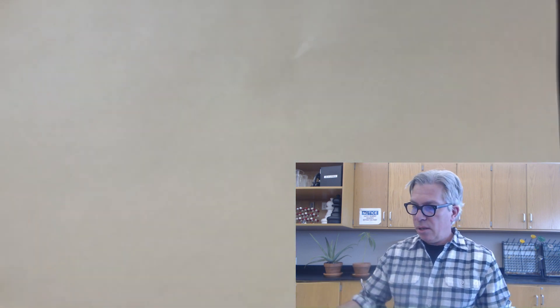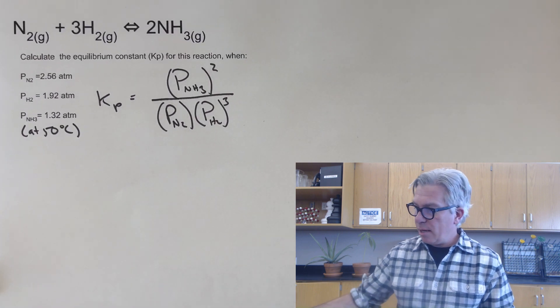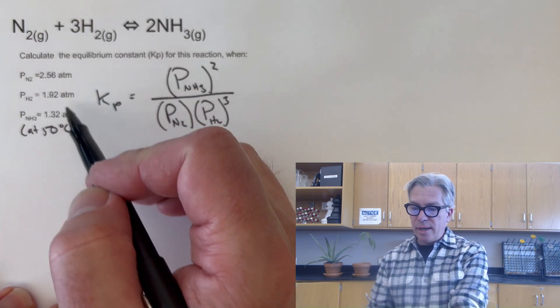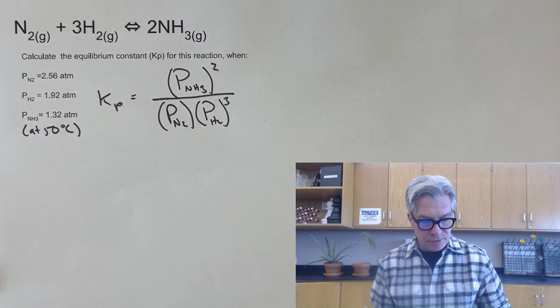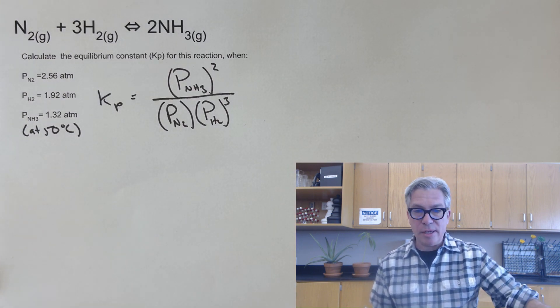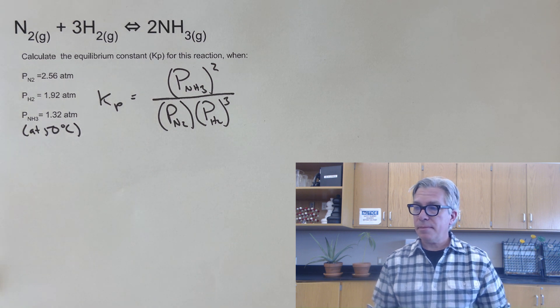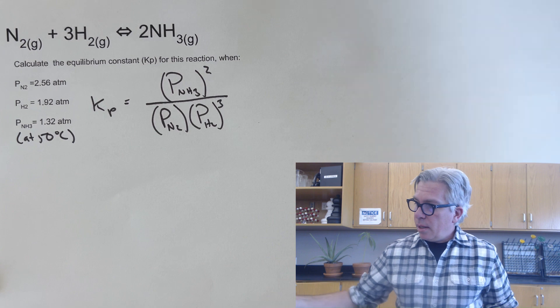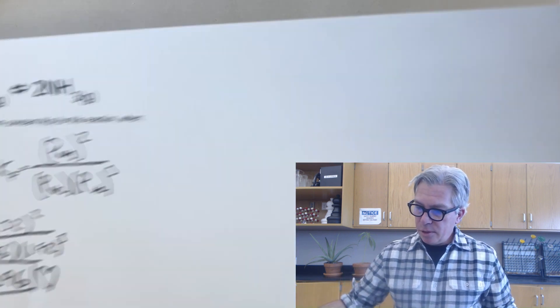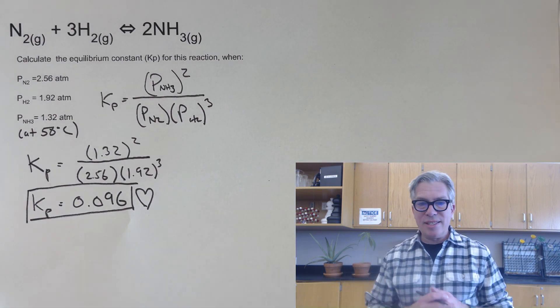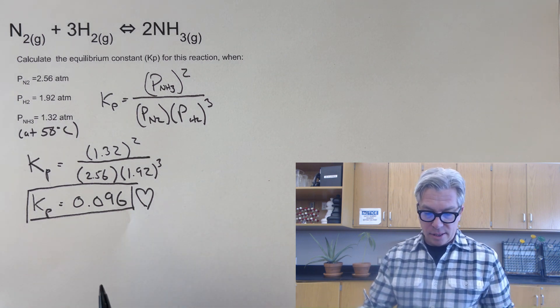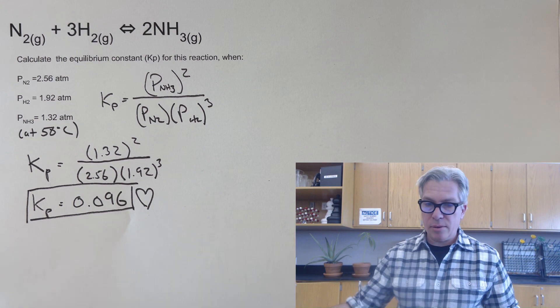So your turn, go back to the ammonia reaction which you wrote the Kp value for. And here's some pressure data at 50 degrees Celsius. Take a moment and see if you can pause the video and calculate Kp for this reaction. And congratulations if you were able to get a value of 0.096 for this reaction. I plugged all the data in and did the math and that's what I got.